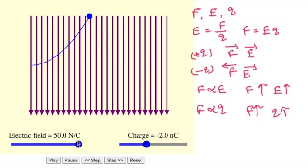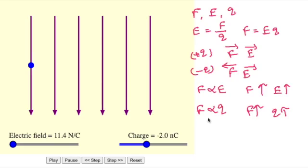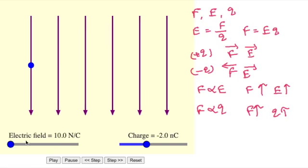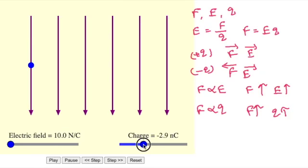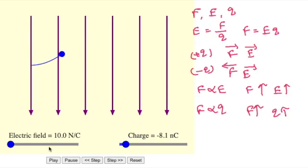Now the second case — the force is directly proportional to the magnitude of charge. I will keep the electric field constant at 10 Newton per coulomb. Initially I am taking the charge as minus 2 nanocoulomb. This is the deflection. Now let me increase the magnitude of charge to 4 or 5 nanocoulomb — this is the deflection. If I increase further, this is the deflection.